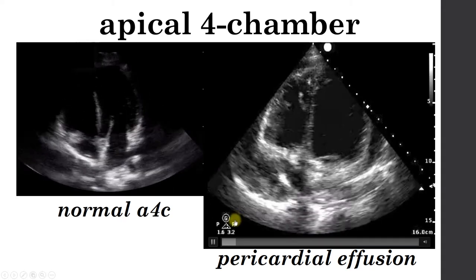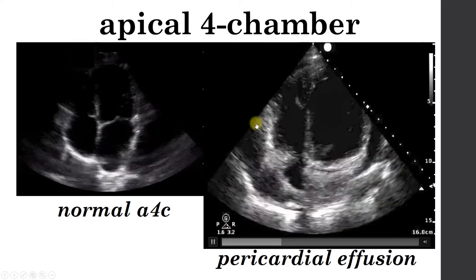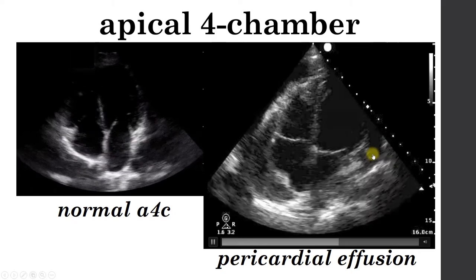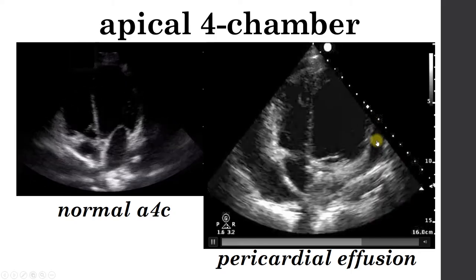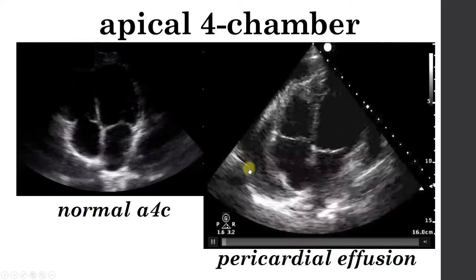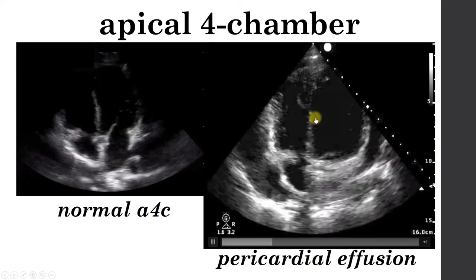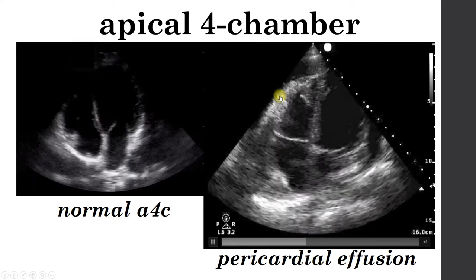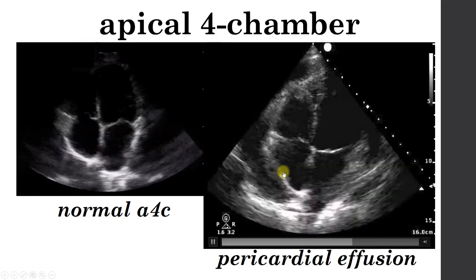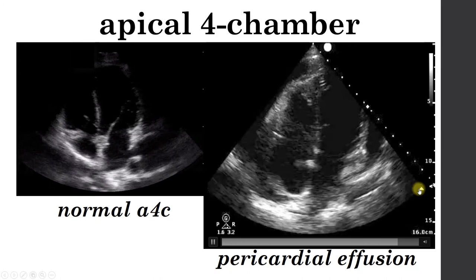Here is what a pericardial effusion looks like on the apical four-chamber view. You see fluid both outside the left ventricular wall and in front of the right ventricular wall. This is also an example of a patient with signs of tamponade — the right ventricle looks like it's collapsing inwards as the heart beats. More impressively, you see collapse of the right atrium as the heart is beating, which is an early finding of pericardial tamponade.